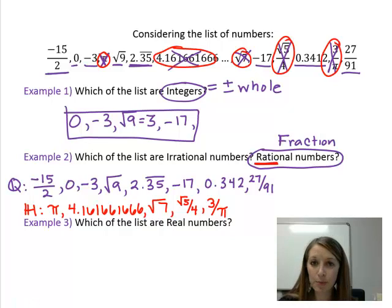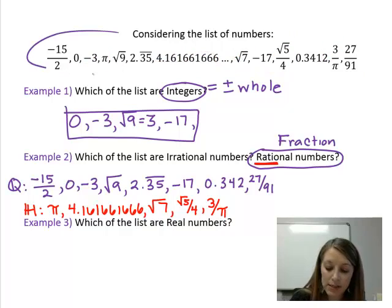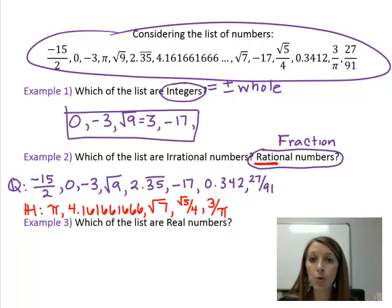My last example, example 3 here. Which of the list are real numbers? Well, if you remember back, real numbers is the largest box that we could possibly think of. The only number that isn't a real number is imaginary numbers. And I told you we would not be referencing any imaginary numbers at this time. So that means every single one of these numbers up here are real numbers. I can take every single one of these numbers and represent them on the number line.